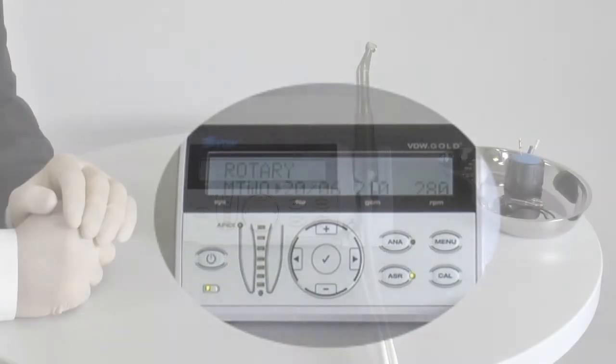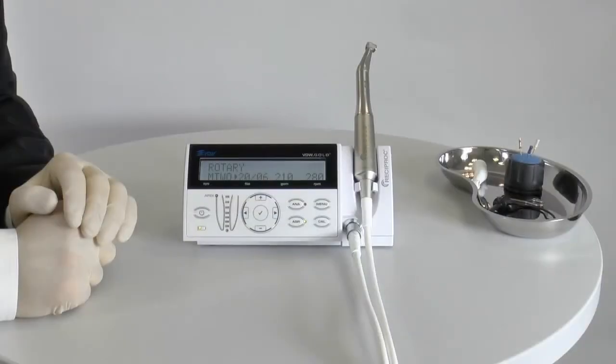Change the file sizes with the plus and minus keys. The VDW Gold Reciproc is a torque-controlled motor and has two safety features for rotary file systems.